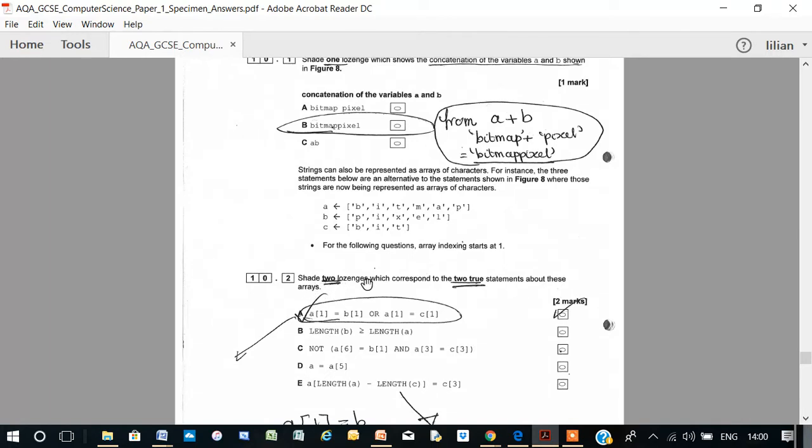Shade 2, which corresponds to the two true statements about these arrays. So, two of these five statements are true. Now, we can cheat here a bit.